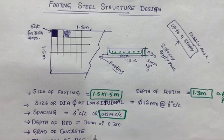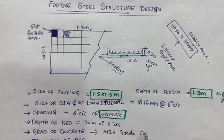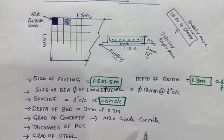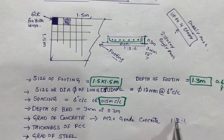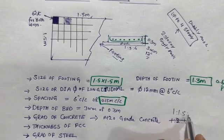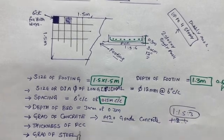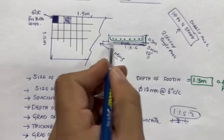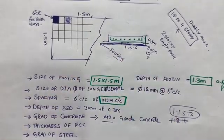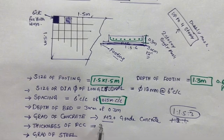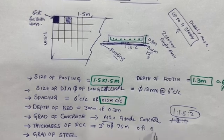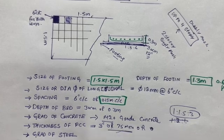Next, the grade of concrete: use M20 grade of concrete for normal residential building up to 4 storey. The mix ratio for M20 is 1:1.5:3.